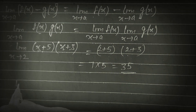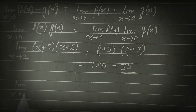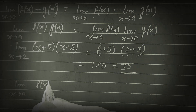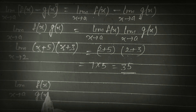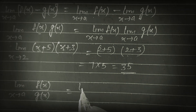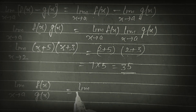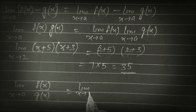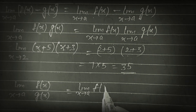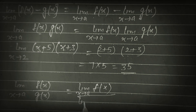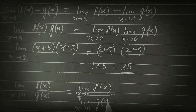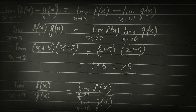If the two functions are in division form — f(x) upon g(x) — then limit is applied to both numerator and denominator: limit x tends to a of f(x) upon limit x tends to a of g(x). Upar bhi aur niche bhi limit lag jayegi.